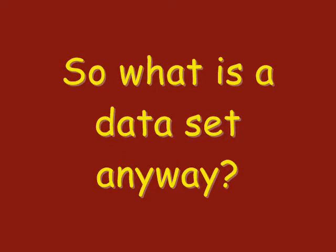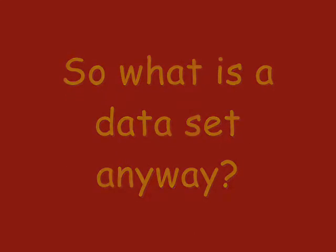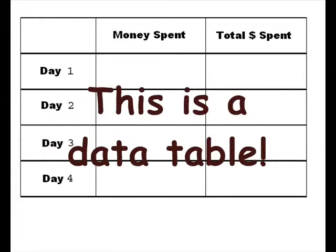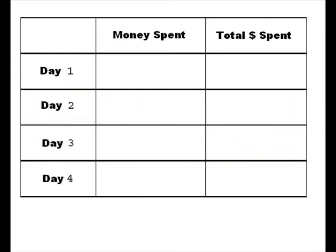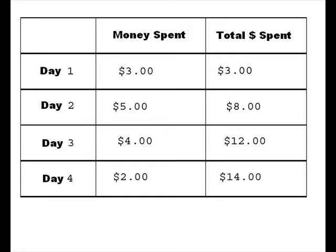So what's a data set? Simply put, it's a record of facts or observations which are normally organized into a data table. This is an example of a data table I can use to track my spending. Notice, as days pass, I'm recording how much I spend. By the end, I can look to see the total amount I have spent as well as how much I spent on each individual day.